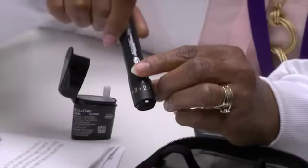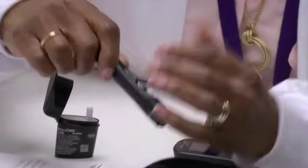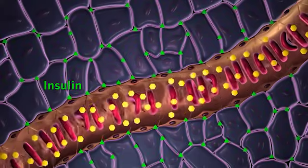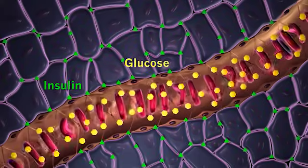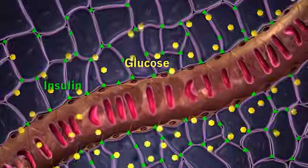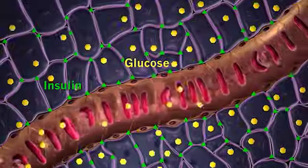There is no standard or typical dose of insulin. Your dose will be the amount of insulin that you need in order to keep your blood sugar in good control. Your doctor will prescribe an insulin dose that is right for you. The most common side effect of insulin is low blood sugar, or hypoglycemia.